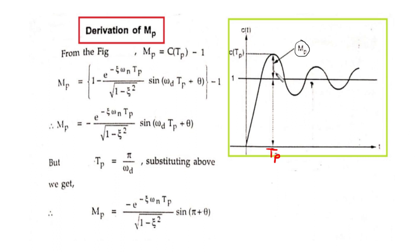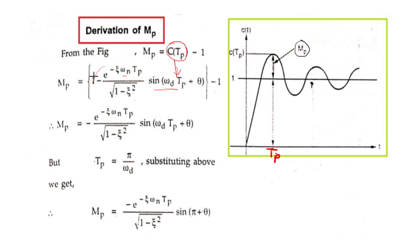Now we derive the expression for peak overshoot. From the graph we can write: mp is equal to C(Tp) minus 1. From the output minus 1 you can get the peak overshoot mp. We know the time response expression of the second order system: 1 minus e raised to minus zeta·ωn·Tp divided by under root 1 minus zeta squared, times sine(ωd·Tp + θ). We substitute this into C(Tp), and the plus 1 minus 1 cancels, leaving mp equal to that exponential-sine term.